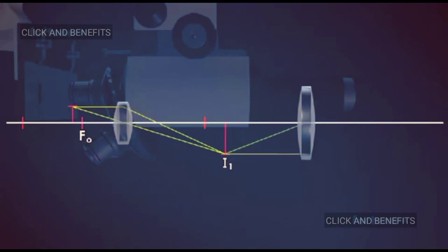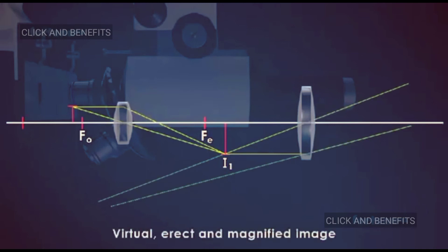The eyepiece is adjusted such that the image i1 lies within the focus of the eyepiece fe. The eyepiece functions as a magnifying glass and forms a virtual, erect, and magnified image i2 of the object.